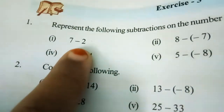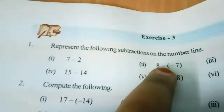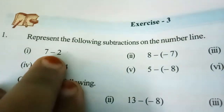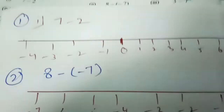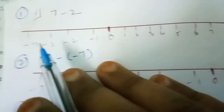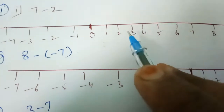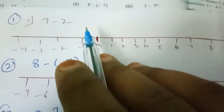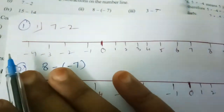So the first one is 7 minus 2. We can easily subtract it, but if there are integers you will be confused. So here are some rules. Always when you make a number line, put positive numbers on the right side and negative numbers on the left side. Whenever you do addition, move to the right side. Whenever you subtract, move to the left side.